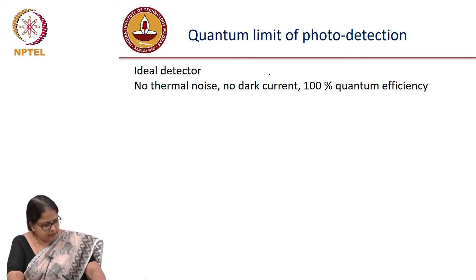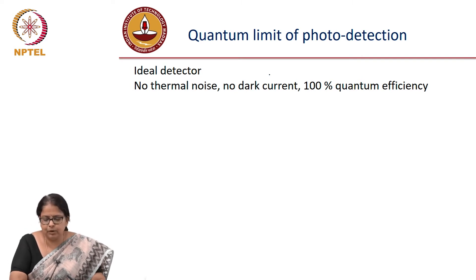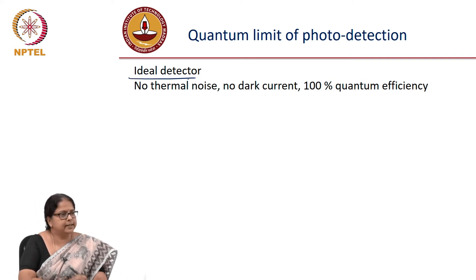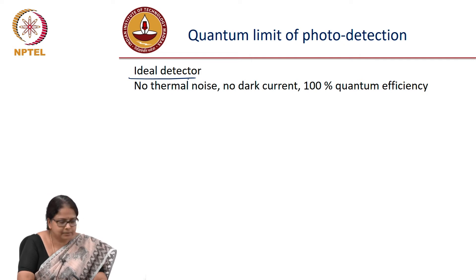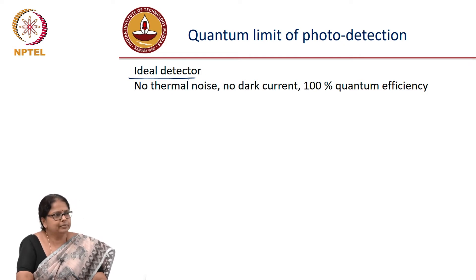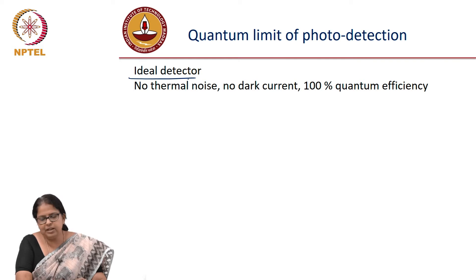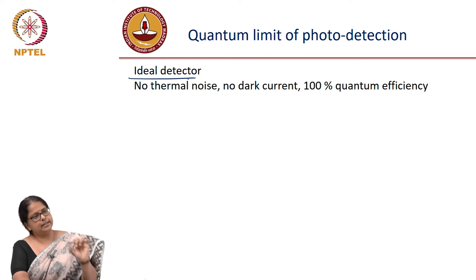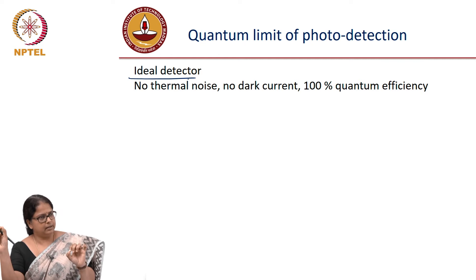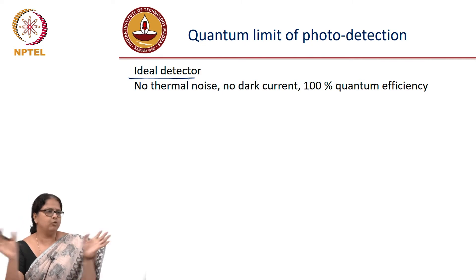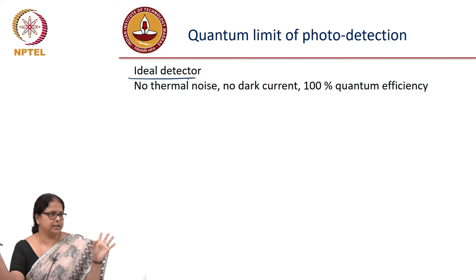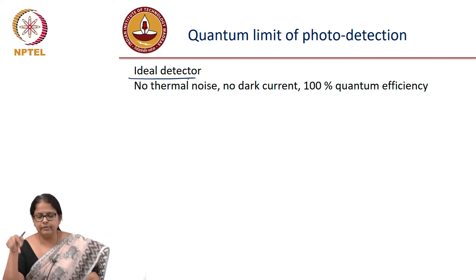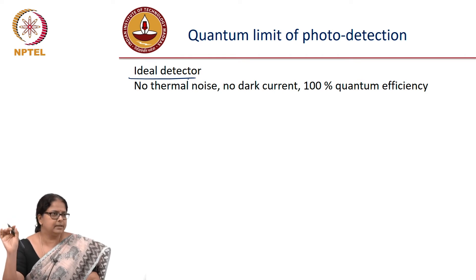For the next couple of slides, we are going to use an ideal detector: there is no dark current, no thermal noise, and 100 percent quantum efficiency. 100 percent quantum efficiency means that every photon incident on my detector produces one electron-hole pair — no photons are lost in the system. This is still for a PD, not an APD.